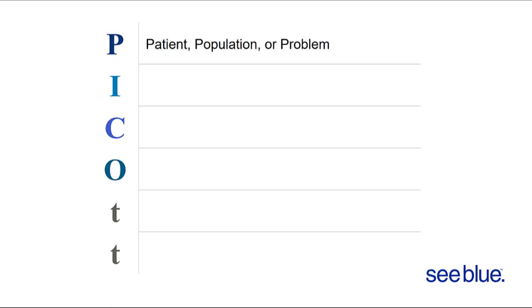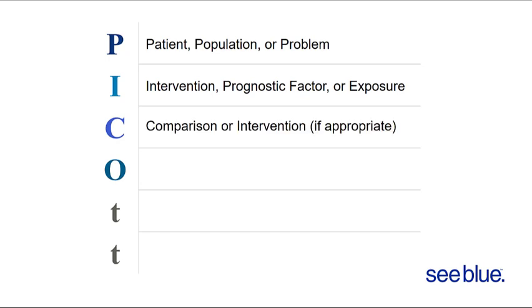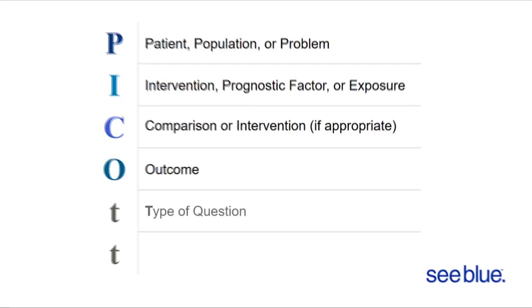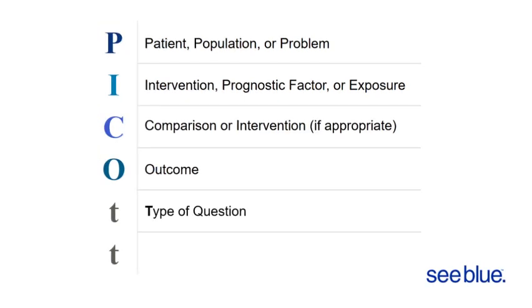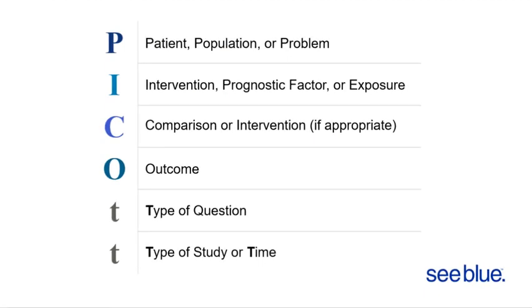PICO is an acronym that stands for Patient, Intervention, Comparison, and Outcome. In addition, the type of question and the type of study can be added.